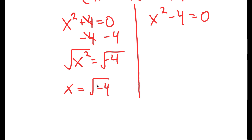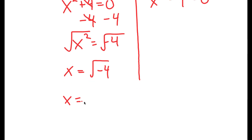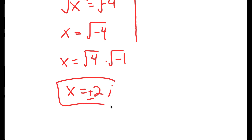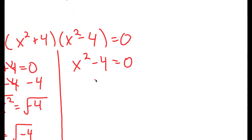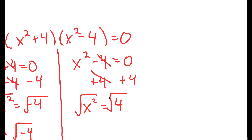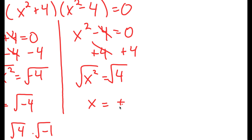The square root of negative 4 is the same thing as the square root of 4 times the square root of negative 1. And the square root of negative 1 is equal to i. So I get x is equal to 2i, and this is positive or negative. Now for x squared minus 4 equals 0, I'm going to simply add 4 on both sides. So I get x squared is equal to positive 4, and if I take the square root, I get x is equal to positive or negative 2.